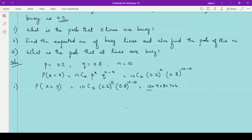divided by 5, 4, 3, 2, 1 into 0.2 raised to 5. 0.2 raised to 5 you can find the value using your calculator or 2 by 10 raised to 5 and this is 8 by 10 raised to 5. So you can use the calculator to find the value.